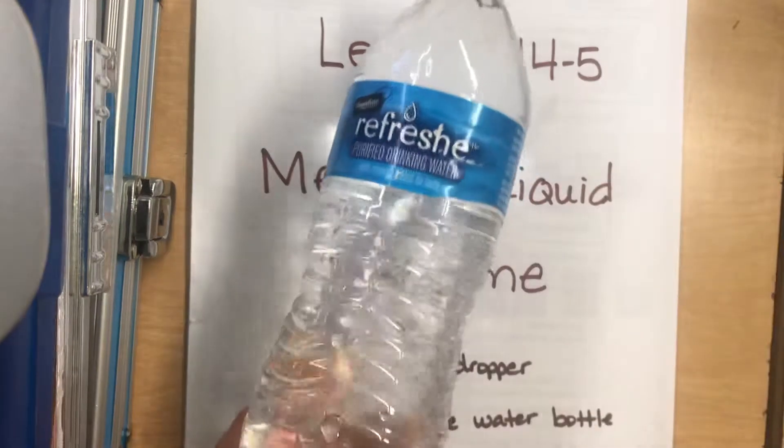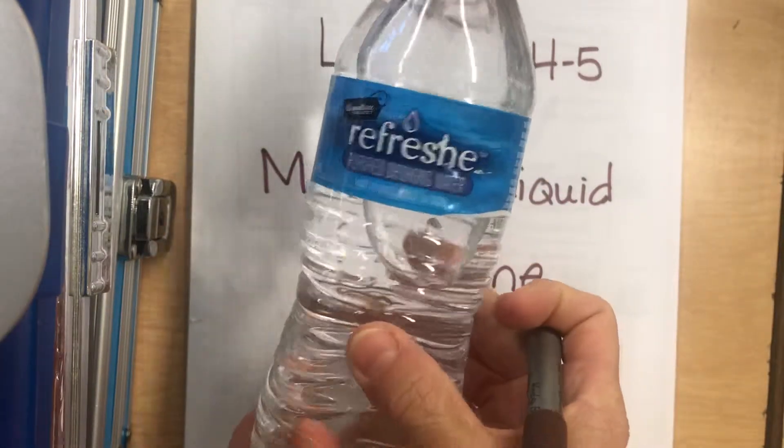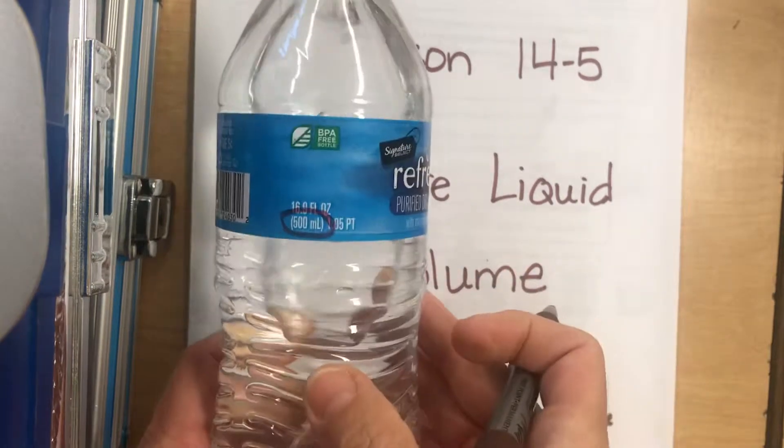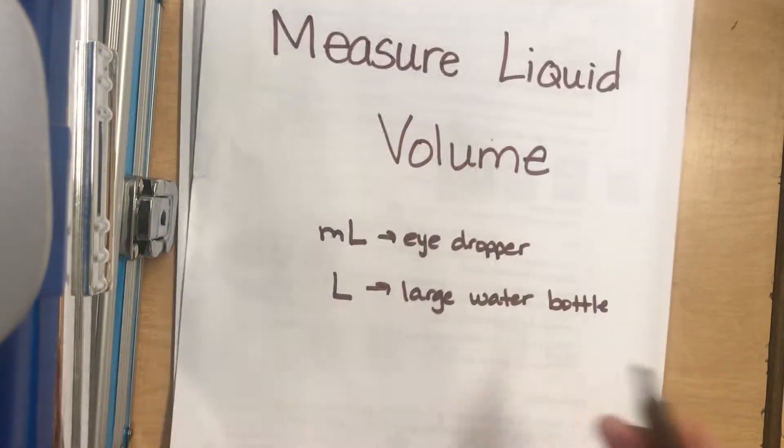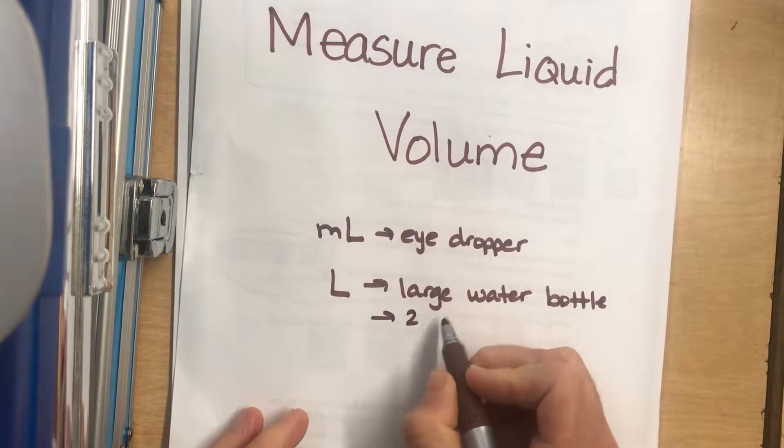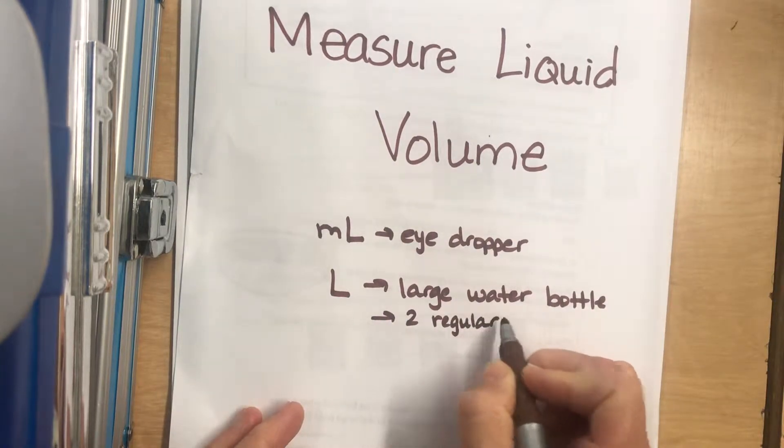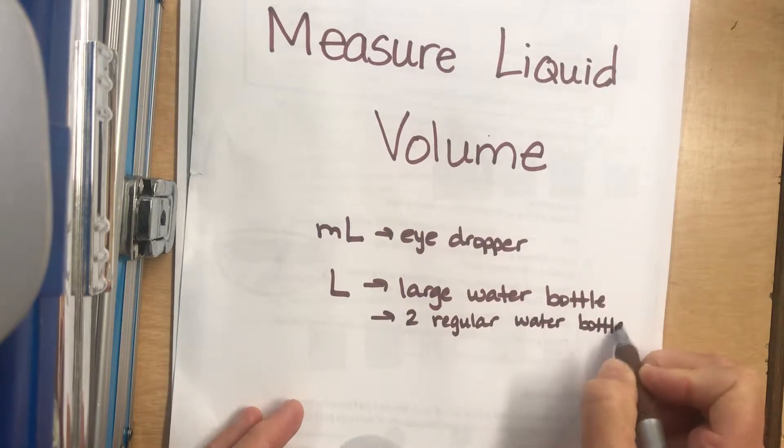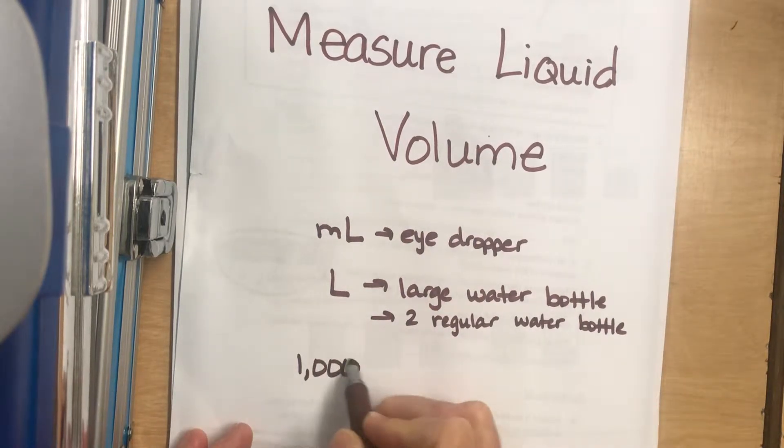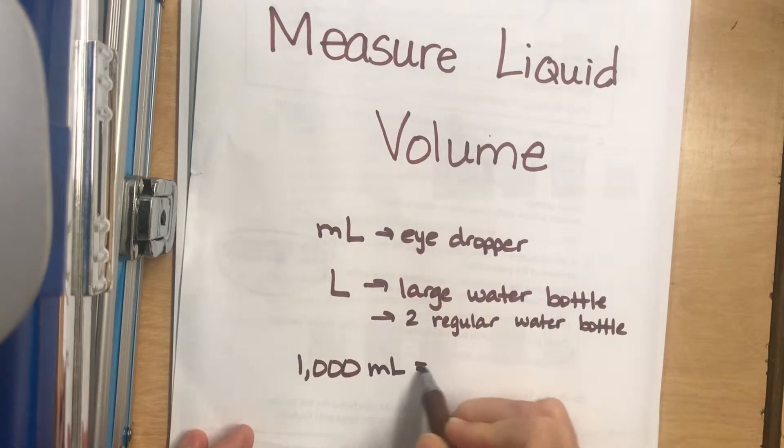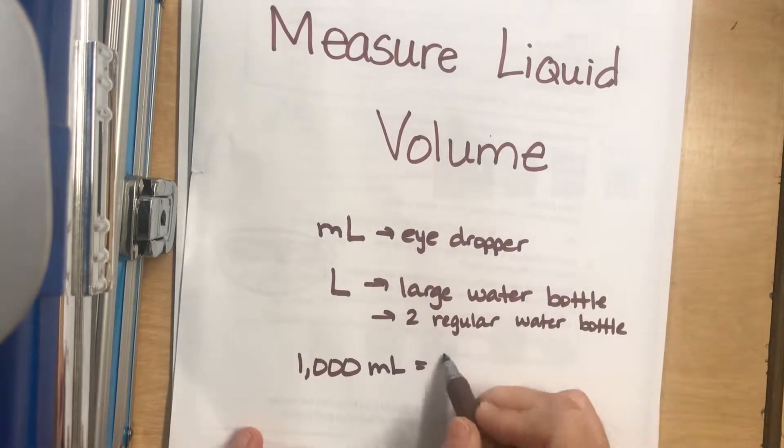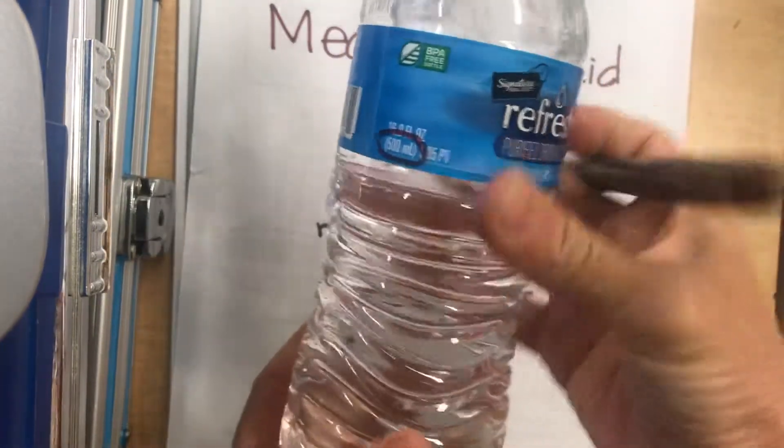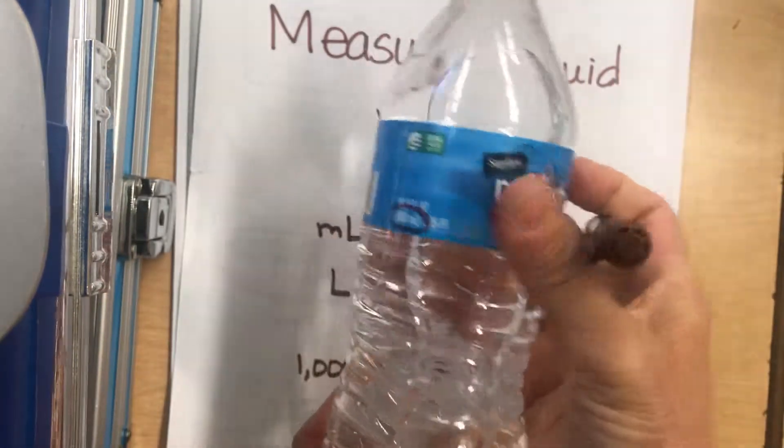A regular size water bottle is 500 milliliters, so two of these would be one liter. Two regular water bottles equal 1,000 milliliters. 1,000 eyedroppers is the same as one liter, or two of these containers, or a bigger one like this being a liter.